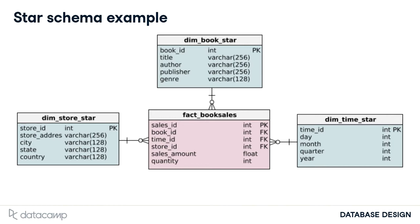You may notice the lines connecting these tables have a special pattern. These lines represent a one-to-many relationship. For example, a store can be part of many book sales, but one sale can only belong to one store.